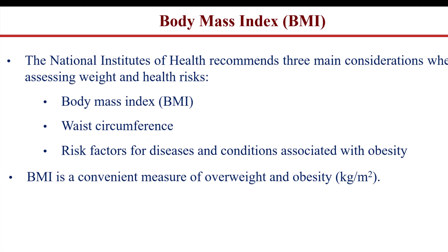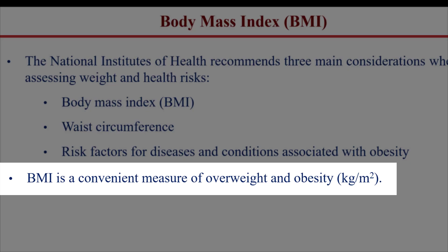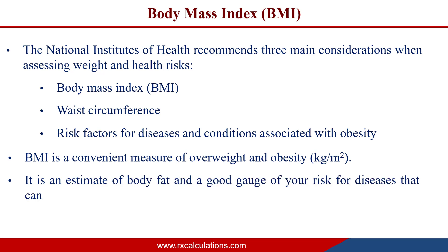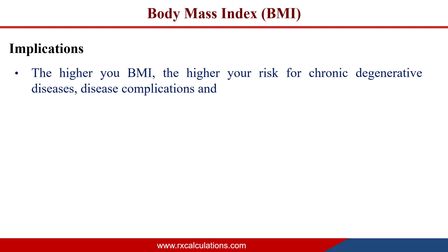So what is the body mass index? The BMI is a convenient measure of overweight and obesity, defined as the ratio of the weight in kilograms to the height in squared meters, with units of kilograms per meter squared. While it is a convenient measure, what it actually is is an estimate of body fat — a good gauge of your risk for diseases that can occur with more body fat. The higher your BMI, the higher your risk for chronic degenerative diseases, disease complications, and mortality.